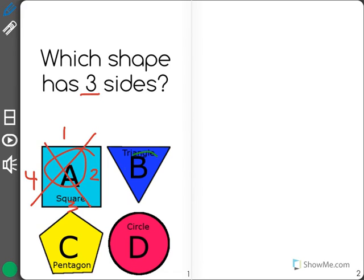The next shape is a triangle. I count one, two, three sides. That looks like the right answer.